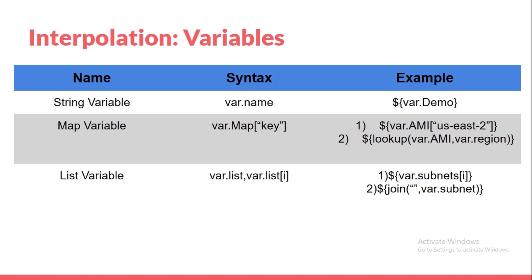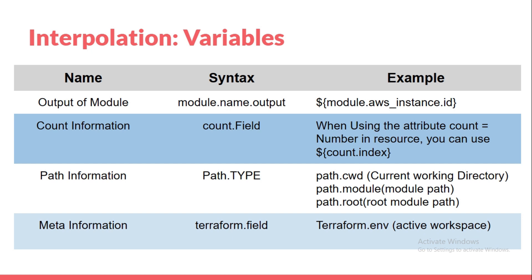For interpolation variables at the module, count, and path level: the output of a module uses the syntax module dot module_name dot output_attribute — for example, module.aws_instance.id, and you can get multiple parameters like IPs, DNS, and other supported attributes. Count is used for creating multiple resources with the same configuration. When you want to reference the index of a resource created with count, you use count dot index.